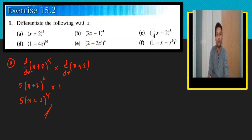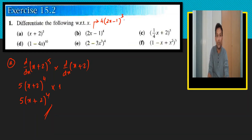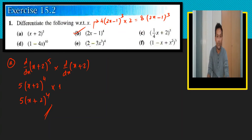For part v: the 4 will become the coefficient and the power reduces by one to 3, multiplied by the differentiation of (2x minus 1), which is 2. So 4 times 2 is 8, giving the final answer 8(2x minus 1) to the power 3.